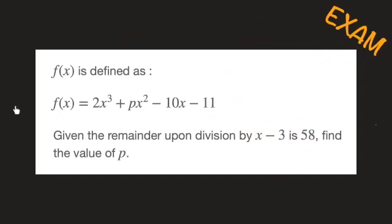Let's see how to solve this exam-style question involving polynomial functions and the remainder theorem. We're given f(x), which is a cubic polynomial with an unknown coefficient, and we're told that the remainder upon division by x minus